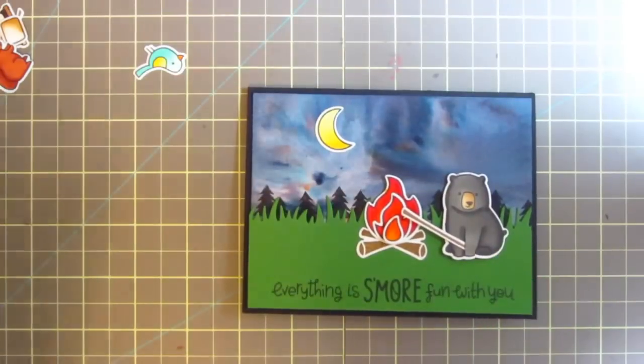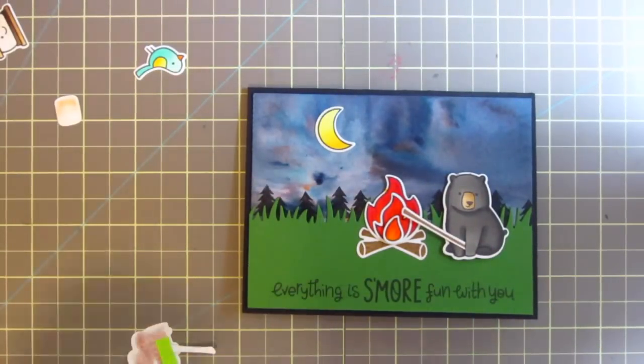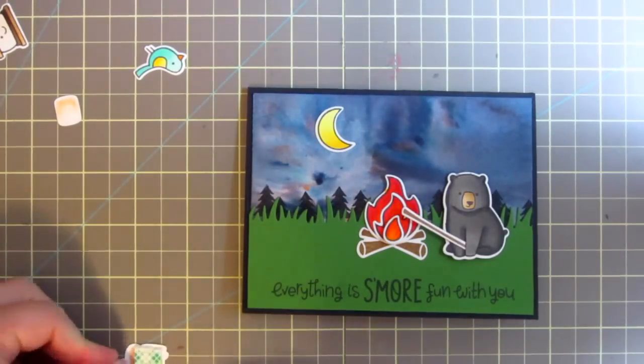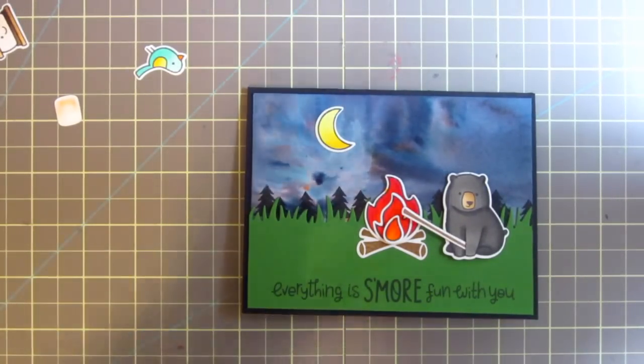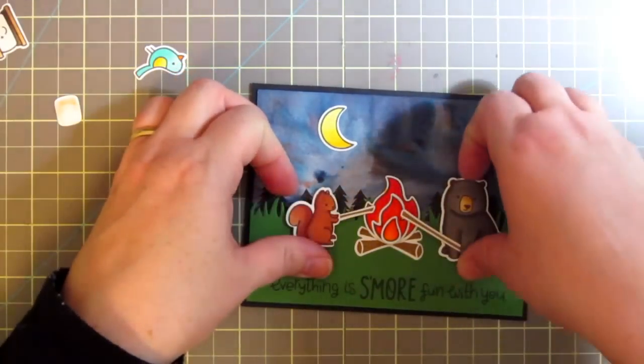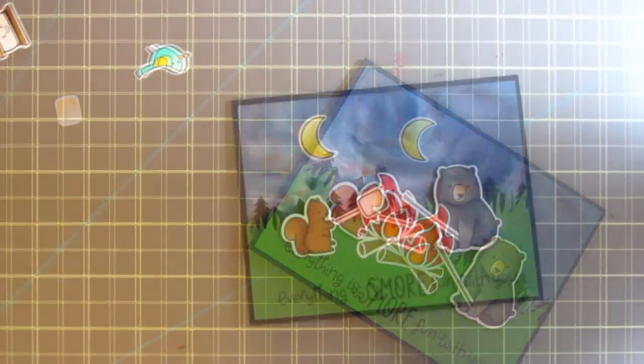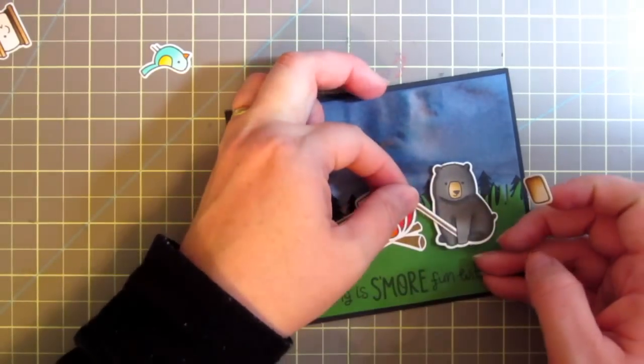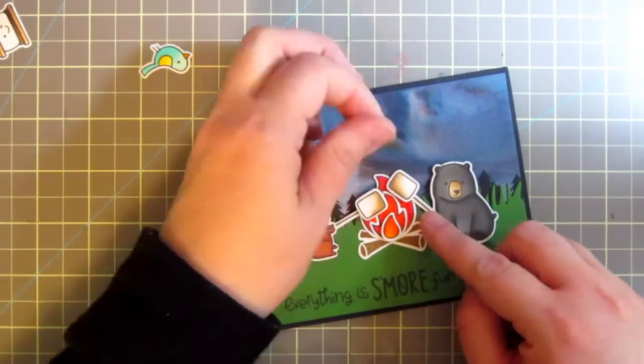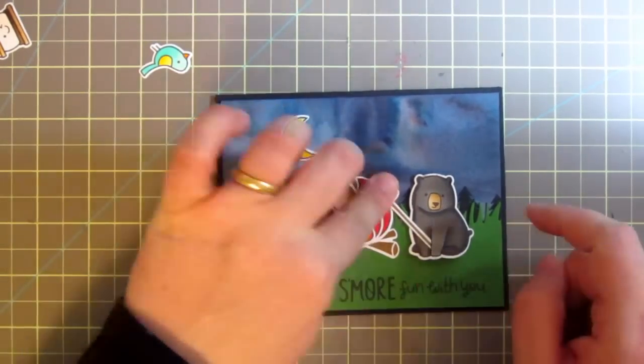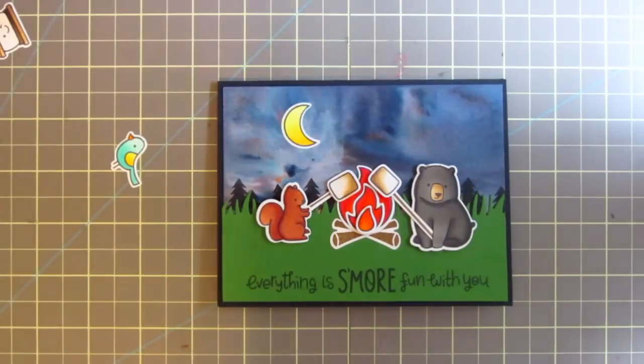To get the bear to hold the little stick, I just took my craft knife and cut a slit right between his front two legs and kind of tucked it back in there, held it in place with a little bit of Post-it tape, and then I went ahead and popped him up on some foam tape as well. Then I'm going to do the same with my little squirrel, just pop him up with some foam tape. Then I'm going to take the little marshmallows and add those to the end of the sticks, but I did have to do a little bit of adjusting just to make it look like they were really holding them over the flames.